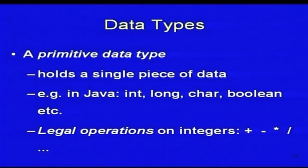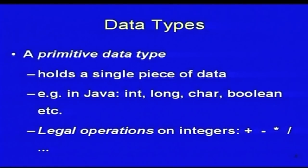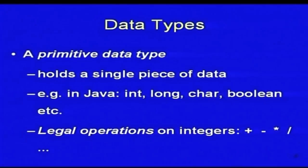All of you, or some of you, have done computer programming and have used programming languages. There are some data types called primitive data types. For example, these hold a single piece of data. In Java or C, most programming languages have built-in data types called int, which stands for integer; long, which stands for long integer; char, which stands for character; and Boolean, which stands for Boolean values. There are also legal operations defined for these built-in data types — for example, for integers you have plus, minus, multiplication, and division.